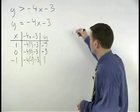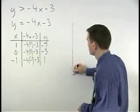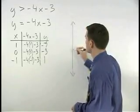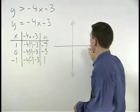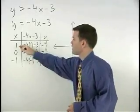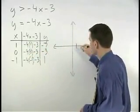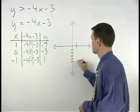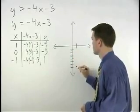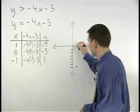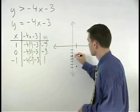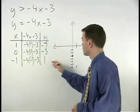So plotting these points on a coordinate system, we have 1, negative 7, 0, negative 3, and negative 1, 1.